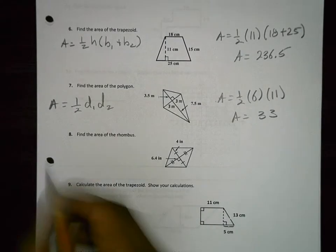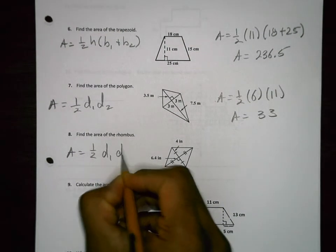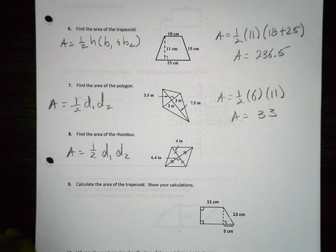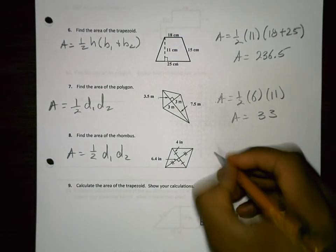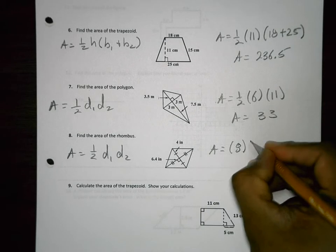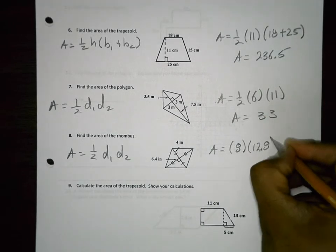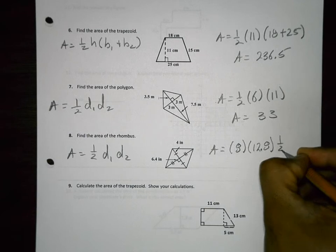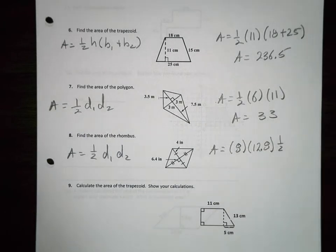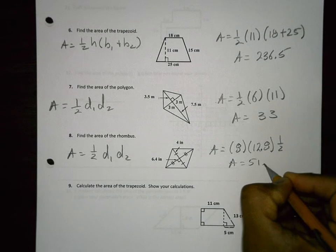Number 8, this is a rhombus. So it's the same formula for area. This is 4 and this is 4. So my diagonals are 8 and 12.8. Don't forget the half in there. So the area equals 51.2.